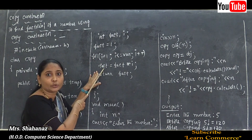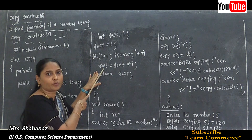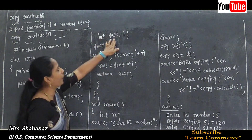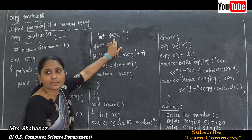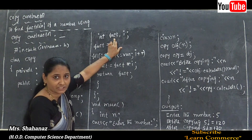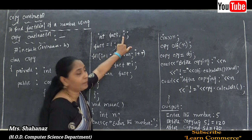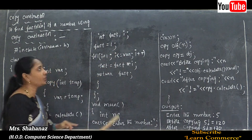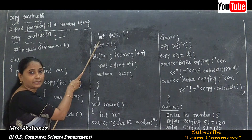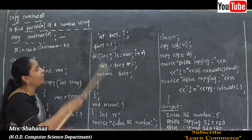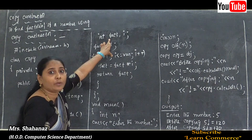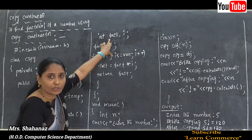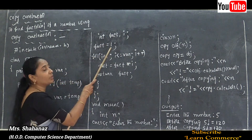Whatever variables we need for the calculation must be declared first. The first variable is 'fact' and the second is 'i', both declared using data type int. We also need to initialize 'fact' — we set fact = 1, because factorial calculation starts by multiplying from 1.